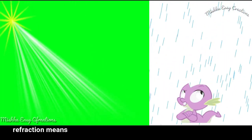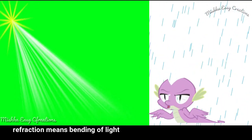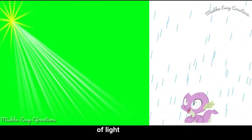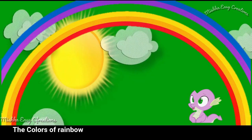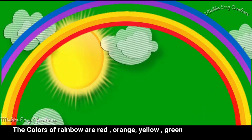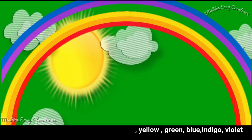Refraction means bending of light in droplets. The colors of a rainbow are red, orange, yellow, green, blue, indigo, and violet.